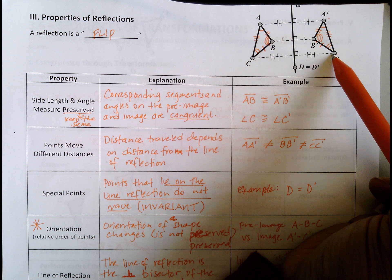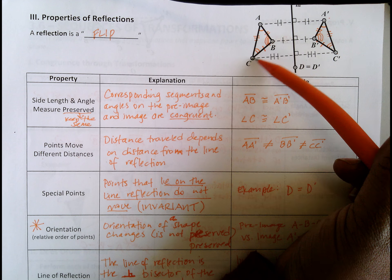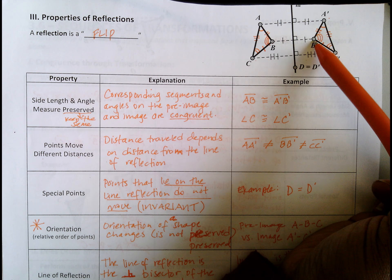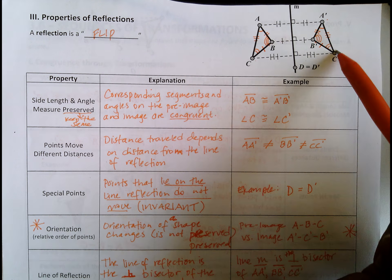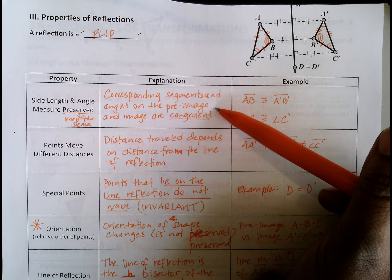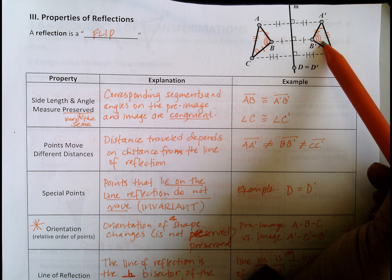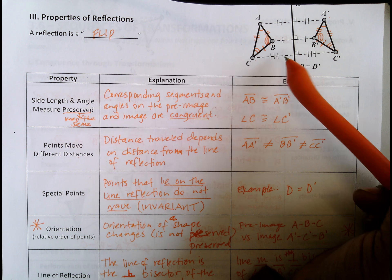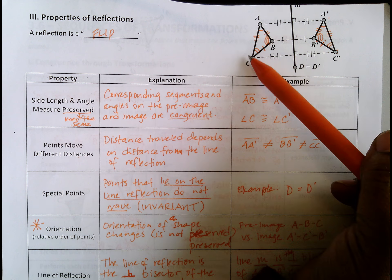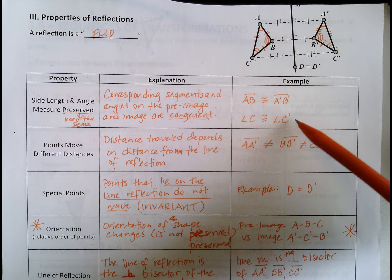So if BC is 10 units, then B prime C prime is also 10 units. The same holds for AC and A prime C prime. Corresponding segments and angles on the pre-image and image are congruent. You will be asked: what is the relationship between side AC and side A prime C prime? They're congruent — whatever the length is on one, the same length is on the other. The same applies to the angles.